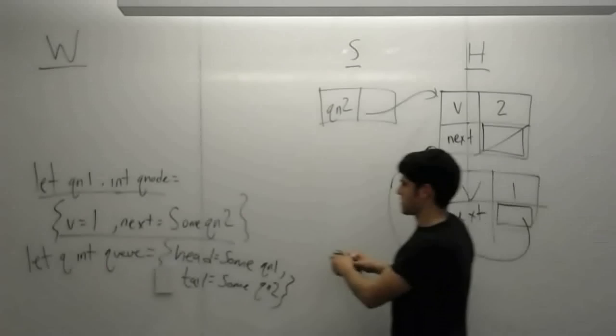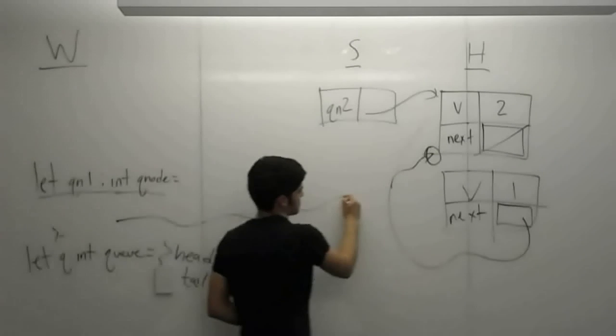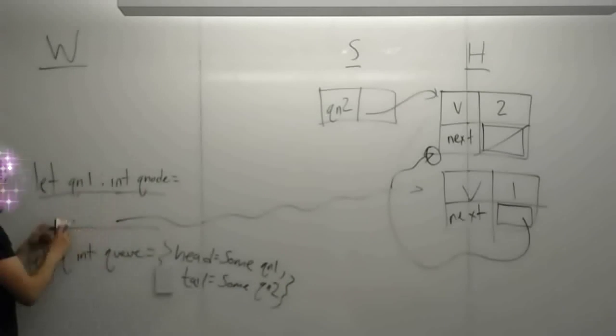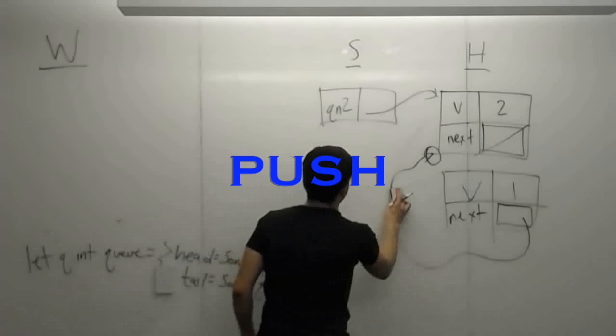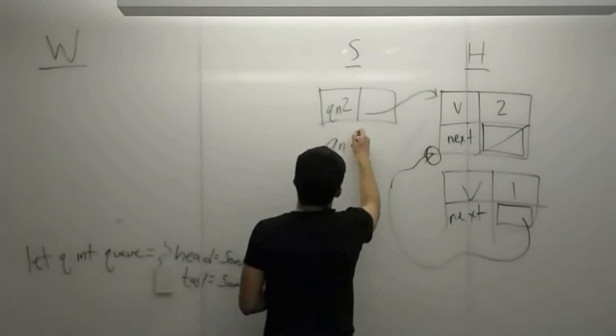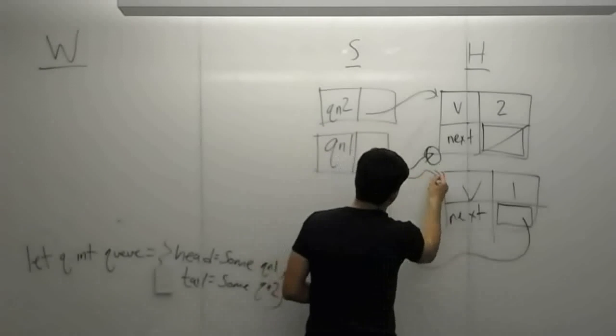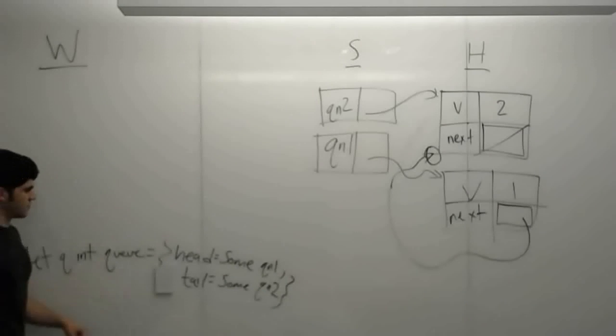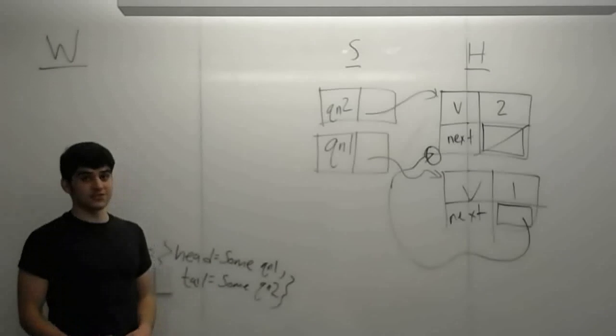Now we can. Boom. Now we've allocated it. Just point to it. And now this whole thing is ready to be pushed. Qn1 is just this. So now we have q. Head equals sum qn1. Tail equals sum qn2.